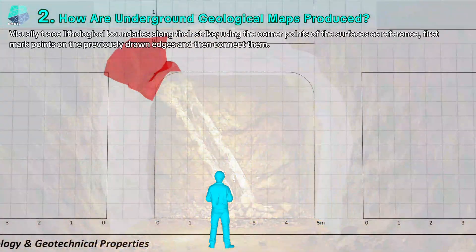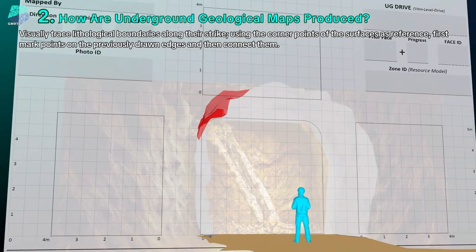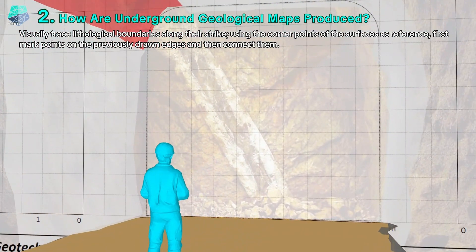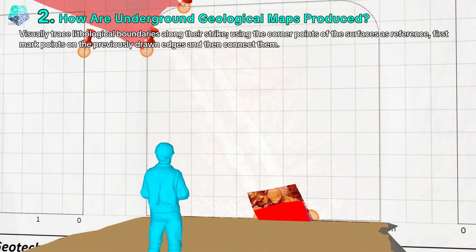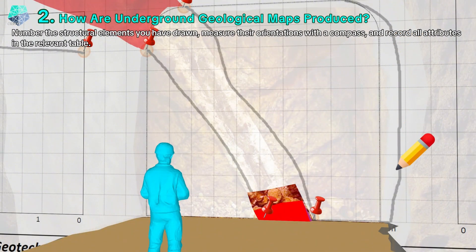Visually trace lithological boundaries along their strike. Using the corner points of the surfaces as reference, first mark points on the previously drawn edges and then connect them. Number the structural elements you have drawn, measure their orientations with a compass, and record all associated attributes in the relevant table.